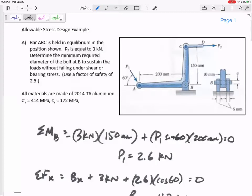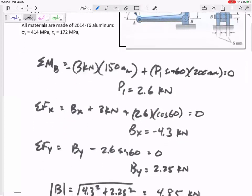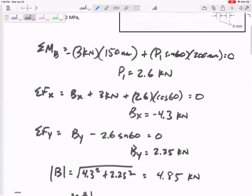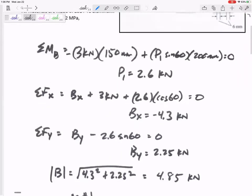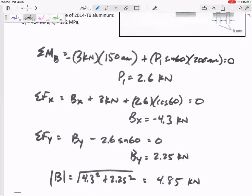So what did I do? We did statics and I found Px and Py. I've got Bx of 4.3, By of 2.25, so a squared plus b squared, take the square root. So the magnitude of the force at the pin is 4.85 kilonewtons.